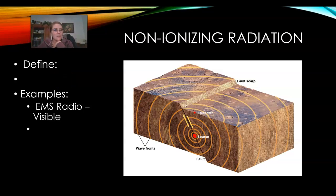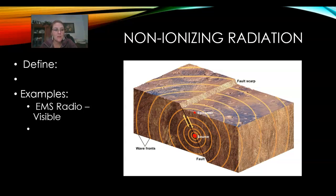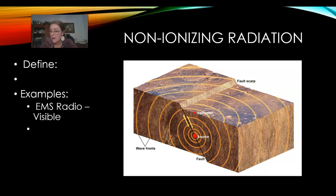So now we've got to talk about non-ionizing radiation. What I would like you to write down is the definition: non-ionizing radiation is radiation that does not ionize matter. For now it's okay if you don't know what 'ionize' means — we're going to talk about that in a second. But you do want to know that it does not harm human tissue. Some examples are electromagnetic waves from radio waves to visible waves, but we actually have some electromagnetic radiation that will be ionizing and can cause harm to human tissue. Another example is those acoustic waves.